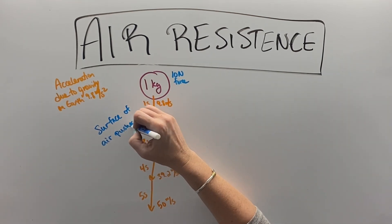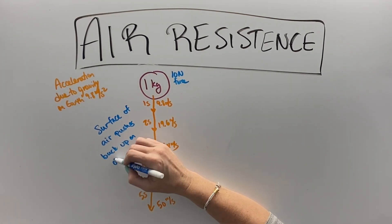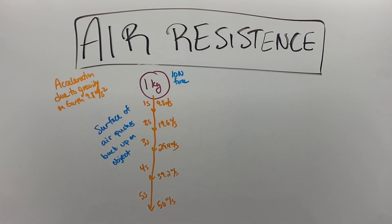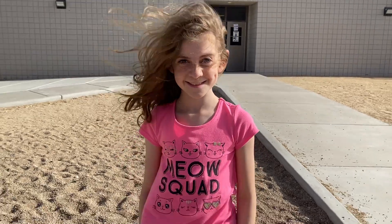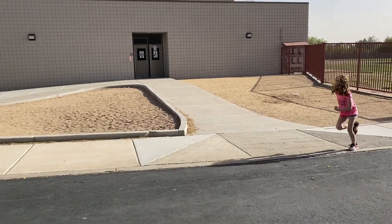The surface of the air pushes against the surface of the object that's moving into it. Like you can see here, with the wind blowing on Macy's clothes and her hair.